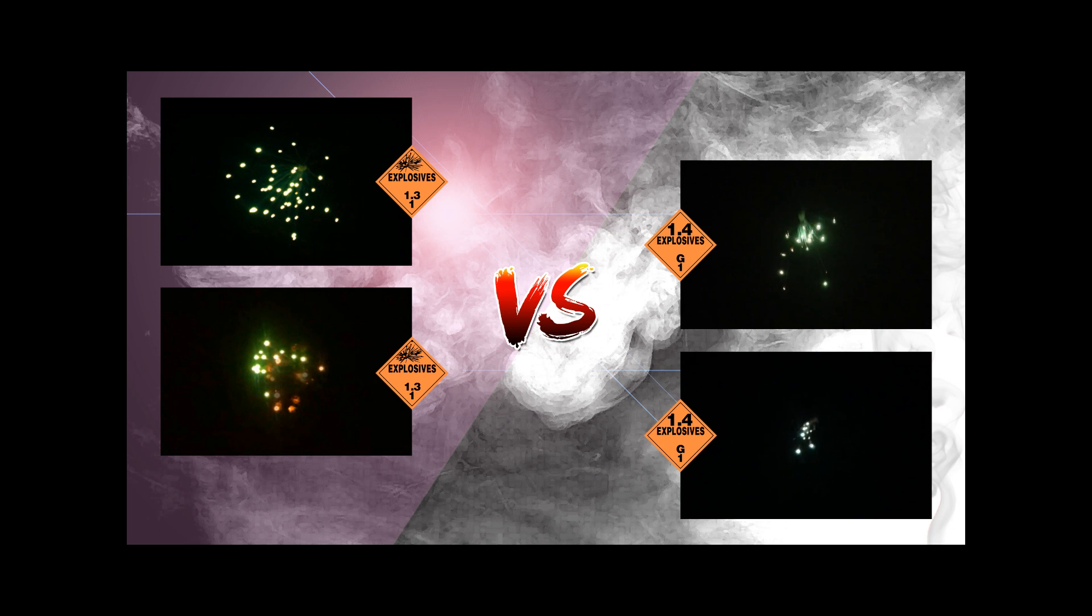So as you can see 1.3G rockets are louder, have larger bursts, brighter colours, a more spherical outwards explosion and are generally far superior to their 1.4G counterparts.